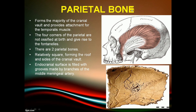The parietal bone is square in shape with four corners. It forms the major part of the cranial vault, and the temporalis muscle attaches to it. The four corners are not ossified at the time of birth and give rise to fontanelles.